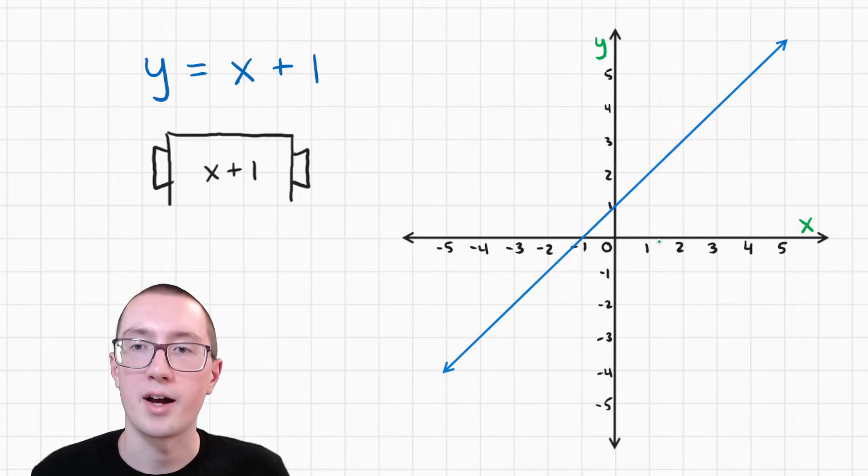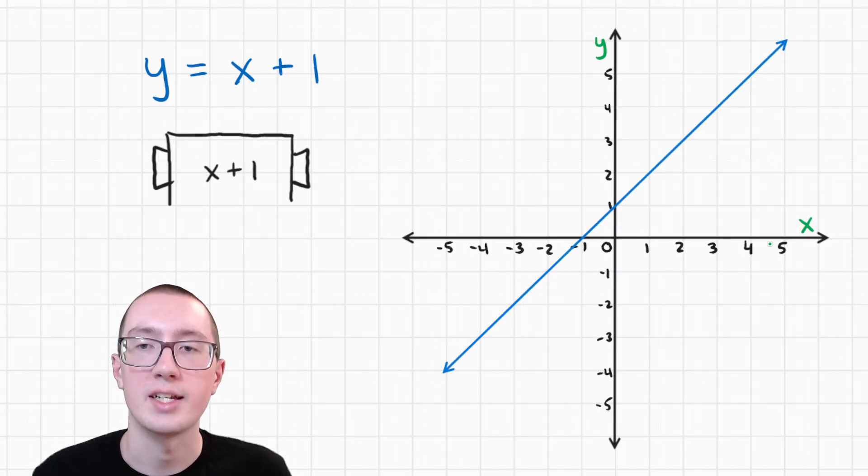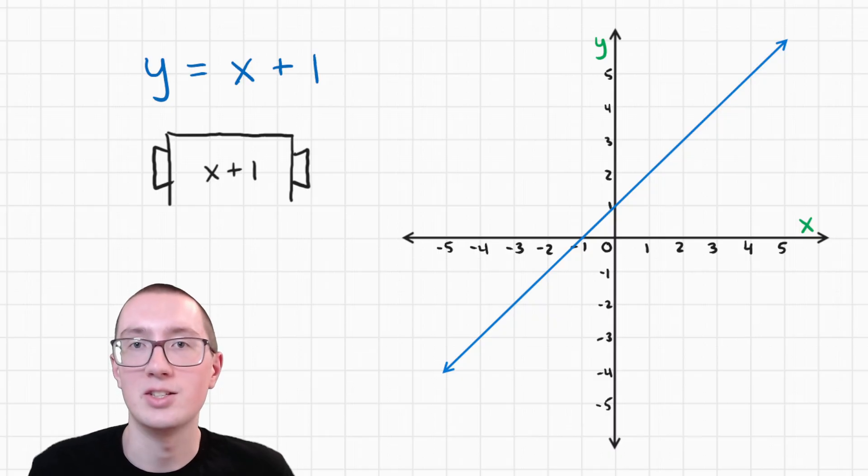So here's how you read this graph. On the left and right, these are all of your ingredients. These are all what you're putting into the machine. And these numbers up and down, these are your dishes. These are what you're getting out of the machine.